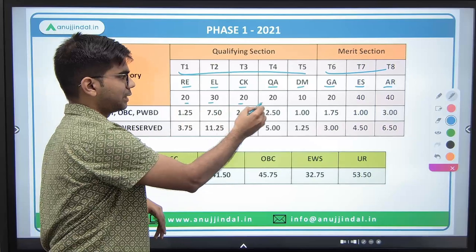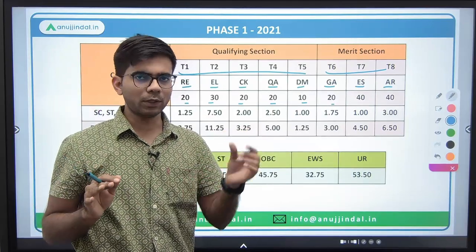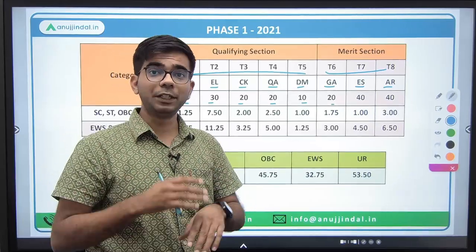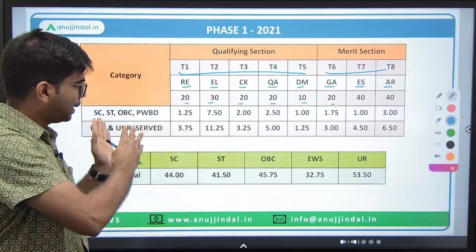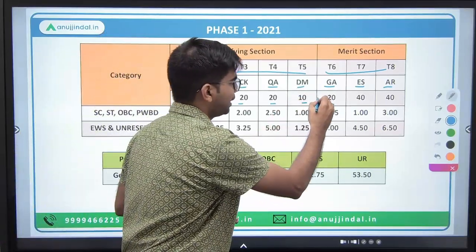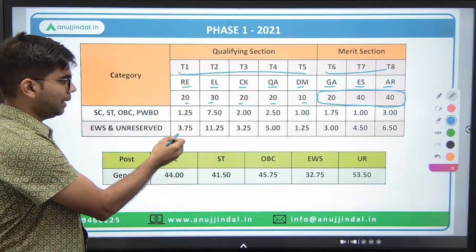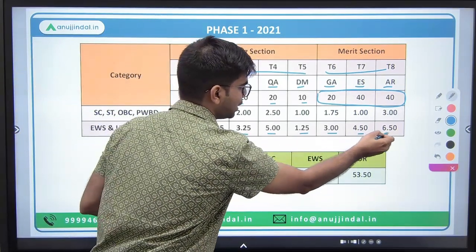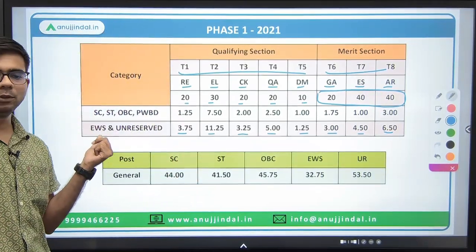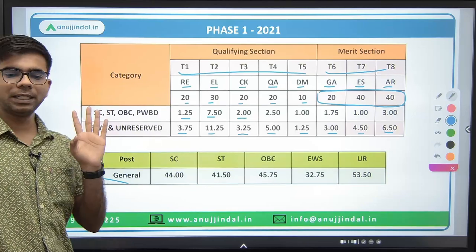These are their respective section marks. Phase 1 is a composite 2-hour exam, so time management during the exam is very crucial. You need to ensure that you cover the overall cutoff. The first table shows sectional cutoffs — that is the bare minimum. The higher marks are for EWS and unreserved category, and the lower marks shown above the cutoffs are for SC, ST, OBC, and PWBD categories.